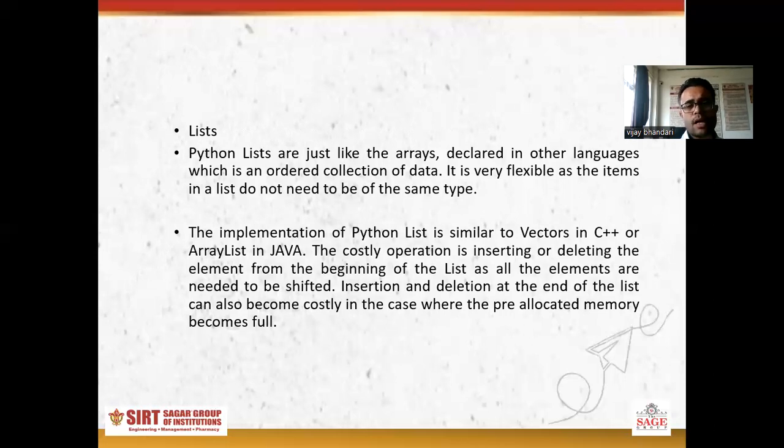So Python lists are just like arrays declared in other languages which is ordered collection of data. It is very flexible as the items and the list do not need to be of the same type. If we see here, the implementation of Python list is similar to vectors in C++ or ArrayList in Java. Firstly, the operation is inserting or deleting the elements from the beginning of the list as elements are needed to be shifted. Secondly, insertion and deletion at the end of the list can also become costly in the case where pre-allocated memory becomes full. So here we will see the implementation of Python list.